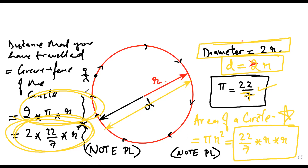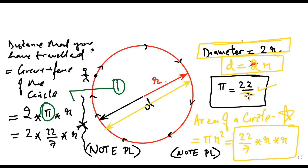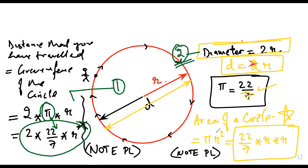So the first formula we have is circumference equals 2πr. If I put the value of π as 22 by 7, the first formula reduces to 2 into 22 by 7 into r. The second formula to remember is that diameter is twice the radius. The third formula is that the area of a circle is equal to πr².